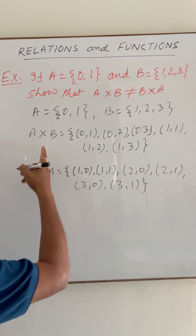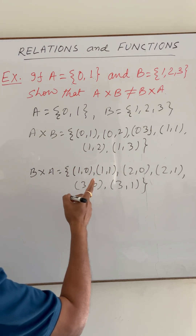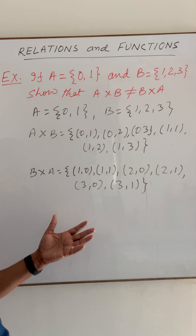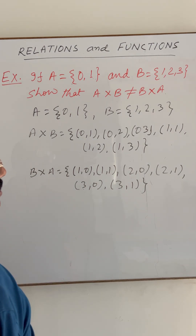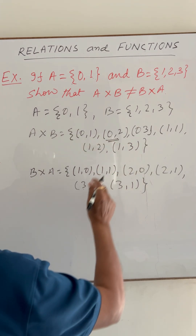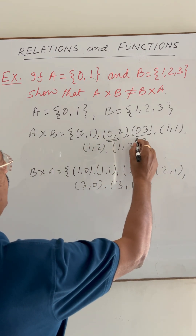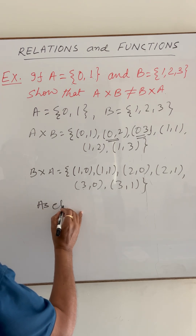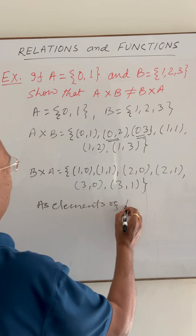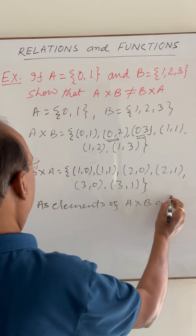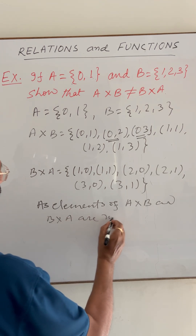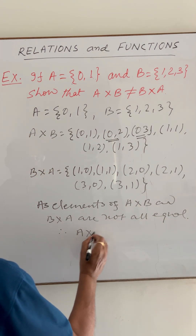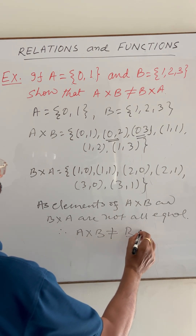Both sets A cross B and B cross A have 6 elements each, so the number of elements is the same. However, some of the pairs are different. For example, (0,2) is in A cross B but there is no (0,2) in B cross A. Similarly, (0,3) is in A cross B but not in B cross A. So the elements are different, and therefore A cross B is not equal to B cross A. Proved.